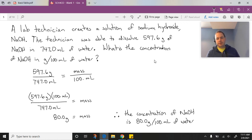So we can figure out that the concentration of NaOH is 80 grams per 100 mils of water.